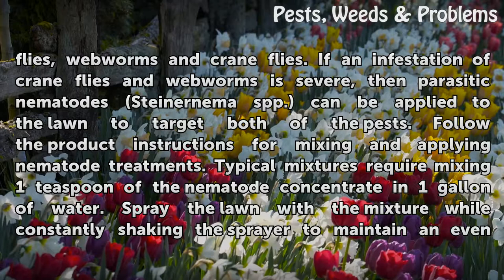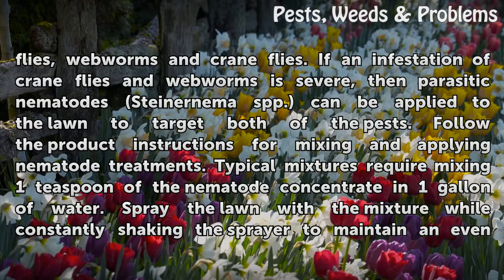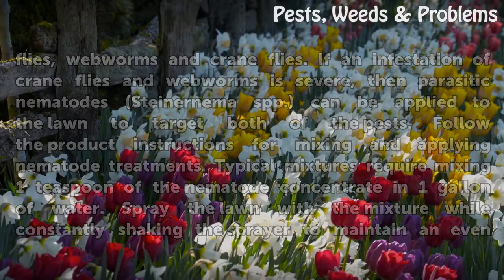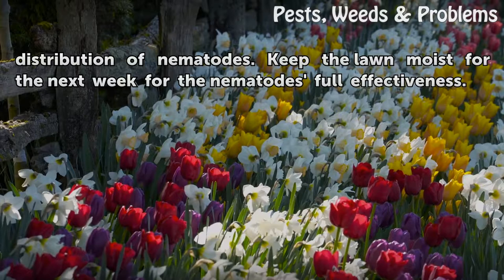Follow the product instructions for mixing and applying nematode treatments. Typical mixtures require mixing one teaspoon of the nematode concentrate in one gallon of water. Spray the lawn with the mixture while constantly shaking the sprayer to maintain an even distribution of nematodes. Keep the lawn moist for the next week for the nematode's full effectiveness.